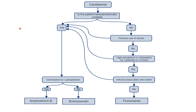A stepwise approach for antifungal selection: first, assess if the patient is hemodynamically unstable. If stable, ask if there was previous azole use, if Candida glabrata excess is present, or if there is biofilm-associated infection. If all answers are no, use fluconazole. If any answer is yes, check for Candida parapsilosis excess — if yes, use amphotericin B; if no, use echinocandins.